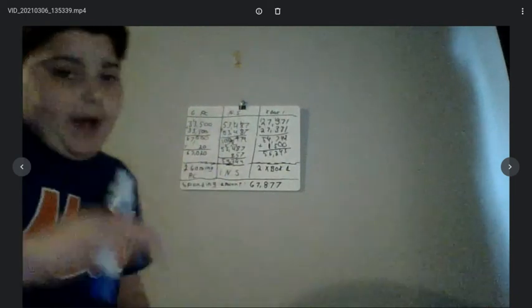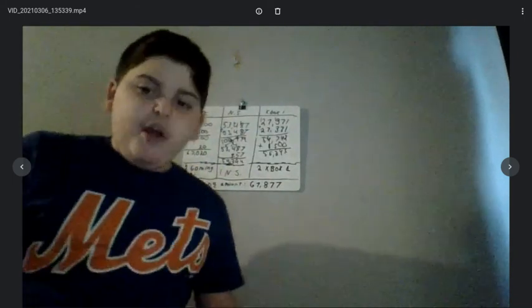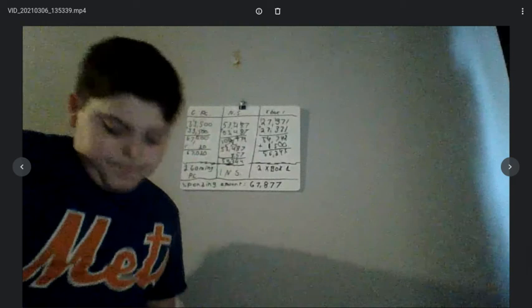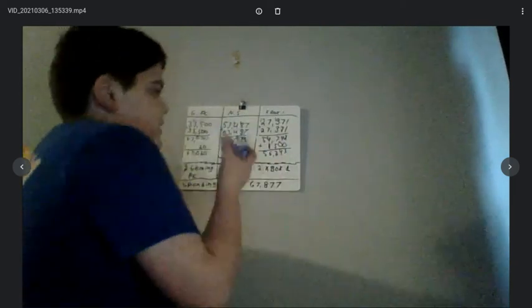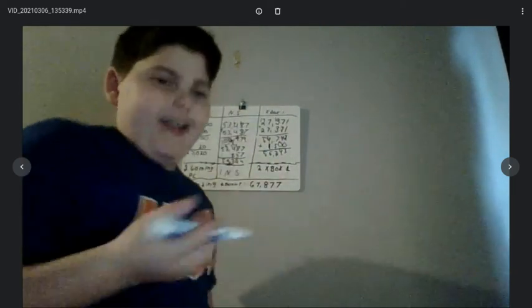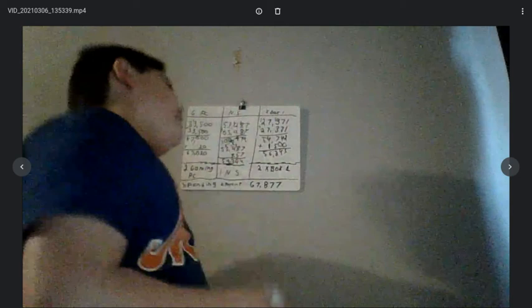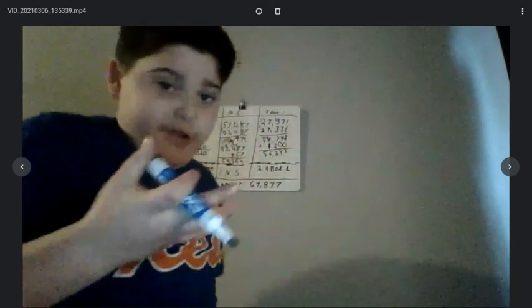And by the way, these numbers are not realistic — because there's no way he could have gotten like $37,000 for his birthday or whatever. There's no way. And then for the Xbox, I decided to do two because it sounded like a low number. So I did $27,371 plus $27,371, which got $54,742 under budget.